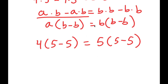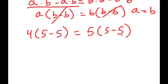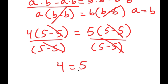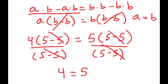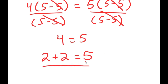If I have something in the form a times b minus b is equal to b times b minus b, we can just cancel these two out, meaning that a is equal to b. So in this case, I have 4 times 5 minus 5 is equal to 5 times 5 minus 5. I can divide both sides by 5 minus 5 — these two cancel out, these two cancel out — and I am left with 4 is equal to 5. Going back to our original equation, 4 is equal to 2 plus 2, so I get 2 plus 2 is equal to 5.